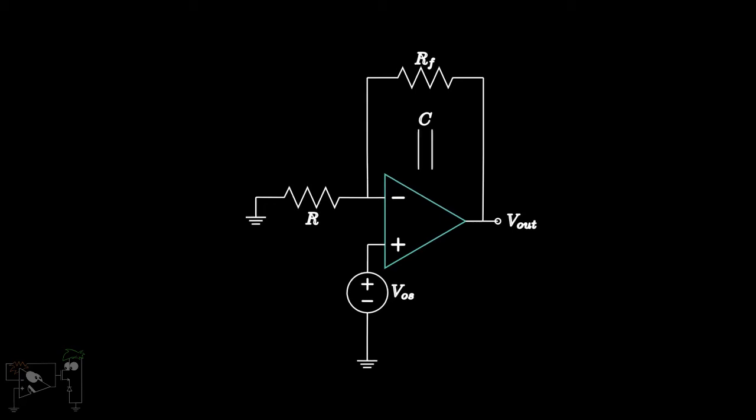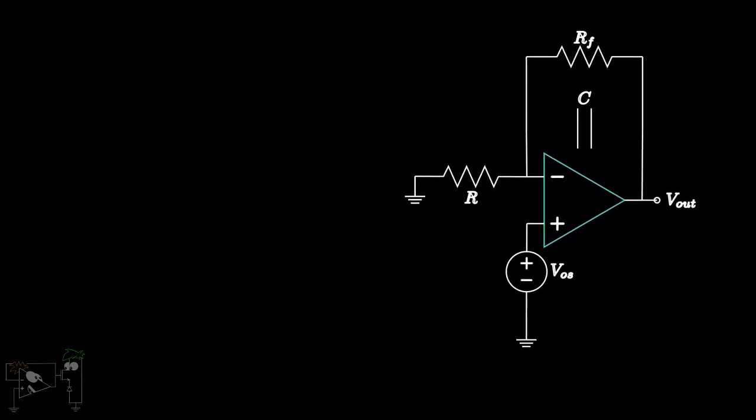Hence, Vout due to VOS is simply 1 plus RF upon R, into VOS. For example, if VOS is equal to 1 millivolt and RF upon R is equal to 100, then Vout contains a DC error of 101 millivolts. However, at least the integrating action on VOS is avoided and the output remains away from saturation.